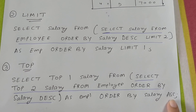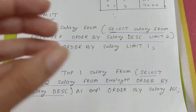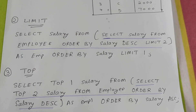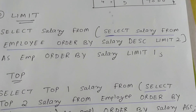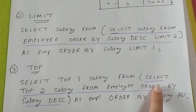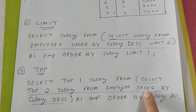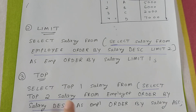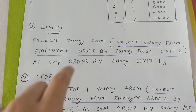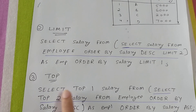With the TOP method, remember that both LIMIT and TOP use ORDER BY — we order in ascending or descending order and then take the top one or limit one result. The inner query is: SELECT TOP 2 salary FROM employee ORDER BY salary DESC. This sorts the table in descending order — 7000, 6000 — and since it is TOP 2, it returns 7000 and 6000.